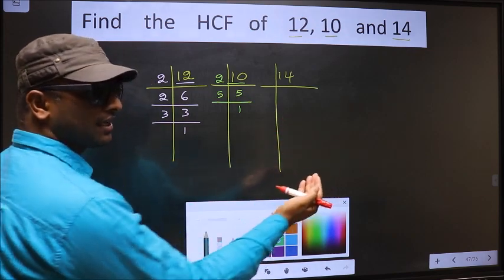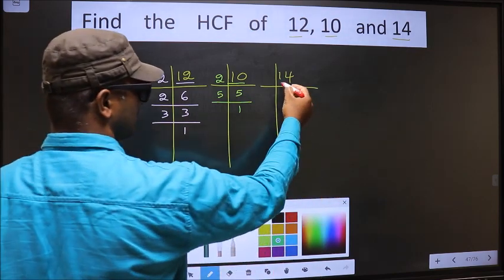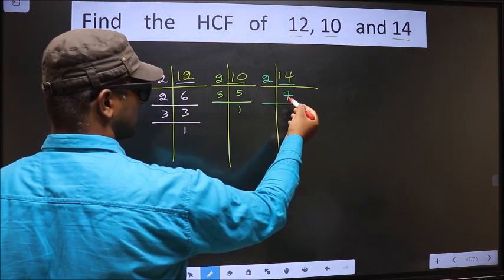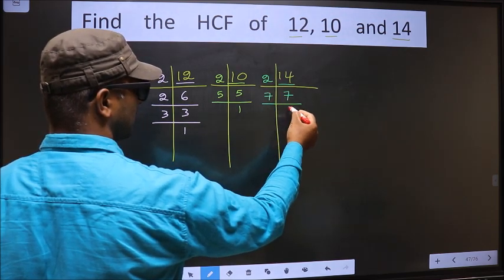Now the other number is 14. 14 is 2 times 7. 7 is a prime number, so 7 times 1 is 7.